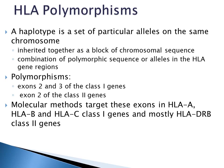A set of particular alleles on the same chromosome is a haplotype. These alleles are inherited together as a block of chromosomal sequence. An HLA haplotype is the combination of polymorphic sequences or alleles in the HLA gene regions. Polymorphisms are concentrated in exons 2 and 3 of the class 1 genes and in exon 2 of the class 2 genes. Molecular methods target these exons in HLA-A, HLA-B, and HLA-C class 1 genes and mostly the HLA-DRB class 2 genes.